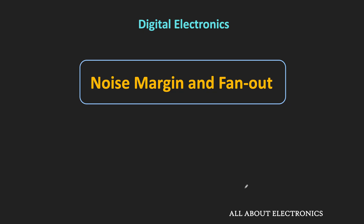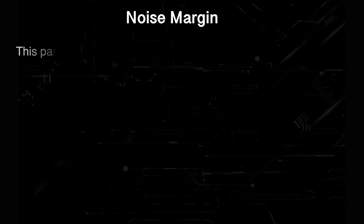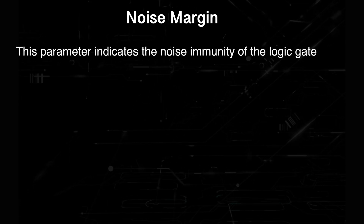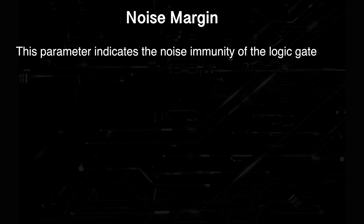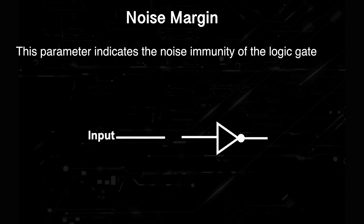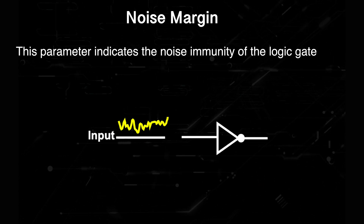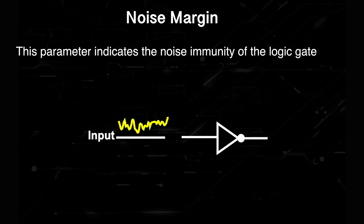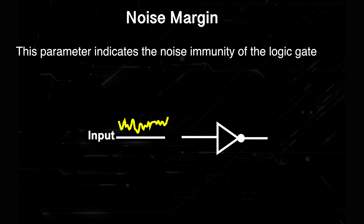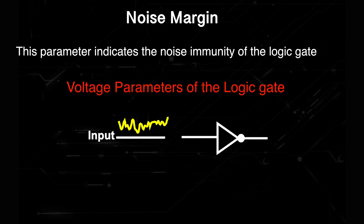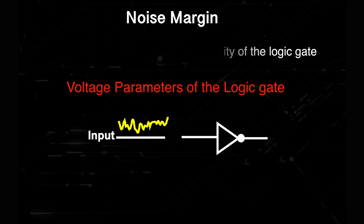Hey friends, welcome to the YouTube channel All About Electronics. In this video, we will see what is noise margin and the fanout of the logic gate. This noise margin is the parameter which gives us the idea of how the logic gate is immune to external noise, and it shows how much noise the logic gate can tolerate without affecting its normal operation. To exactly understand what is noise margin, first let us understand some voltage parameters which are associated with the logic gates.